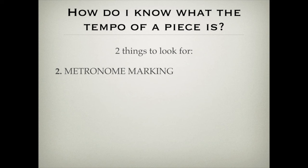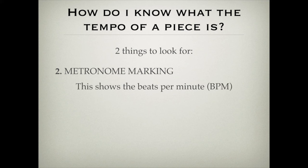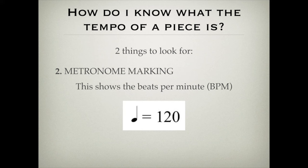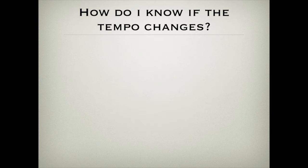The other thing to look for is something called a metronome marking. These are being increasingly used in contemporary sheet music, and they show the beats per minute or the BPM. You'll quite often see something like a quarter note or crotchet equals 120. What that means is the speed or tempo of this piece needs to be 120 quarter notes or crotchets in every minute — that's the speed we go for. So two things to look for: tempo markings and metronome markings.